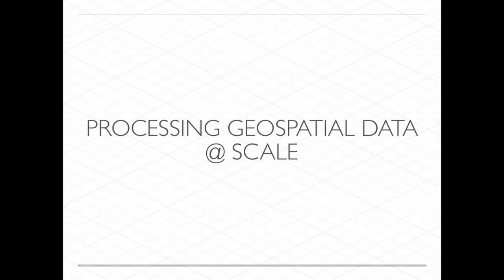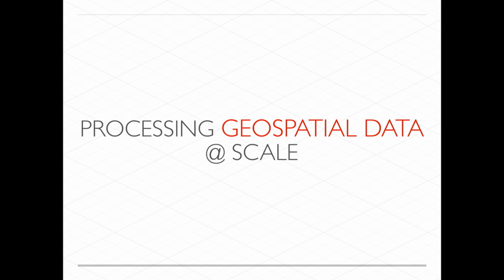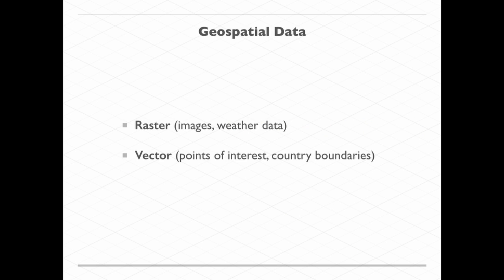So processing geospatial data at scale — let's chop it up. It's a little buzzwordy. Geospatial data is data that has a location. If you have any sort of data and it has a location, that's geospatial data. We mainly chop it up into two different categories: raster data or vector data.